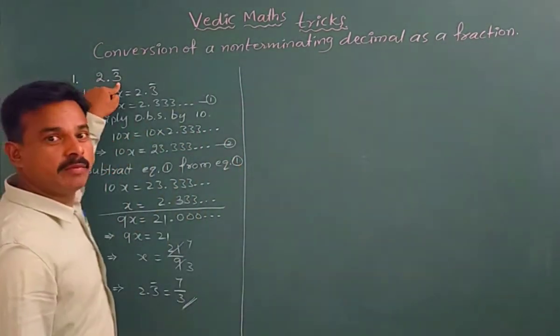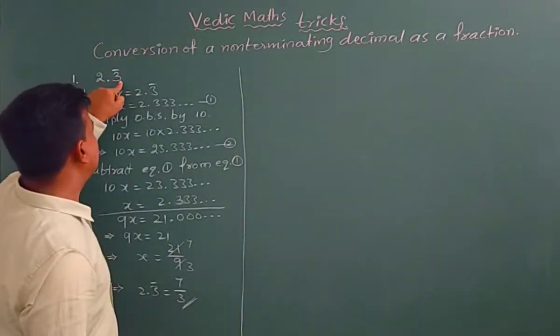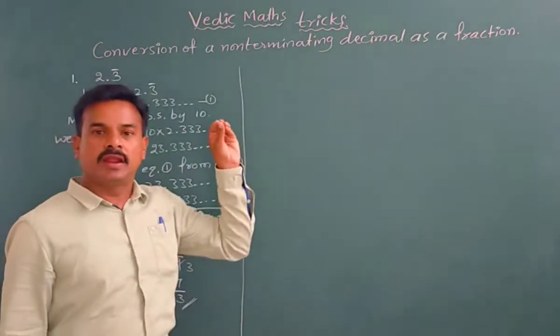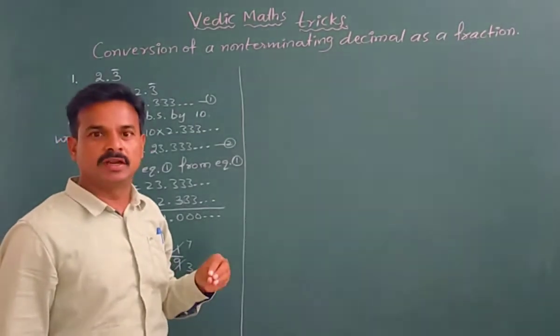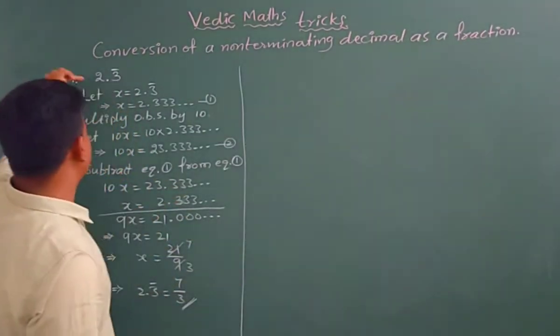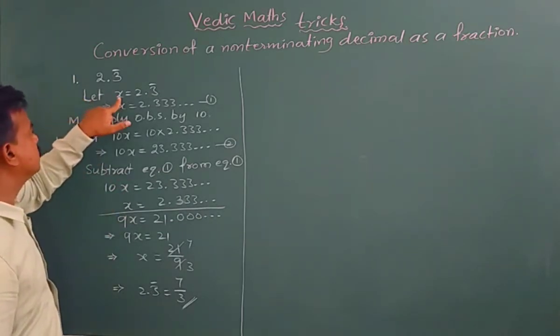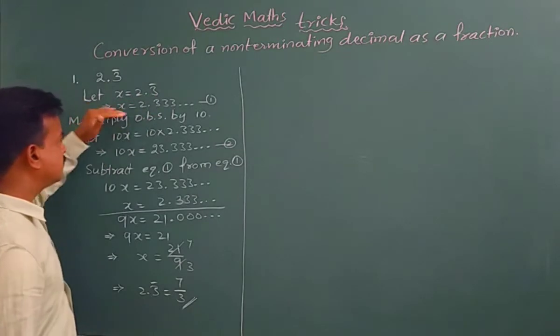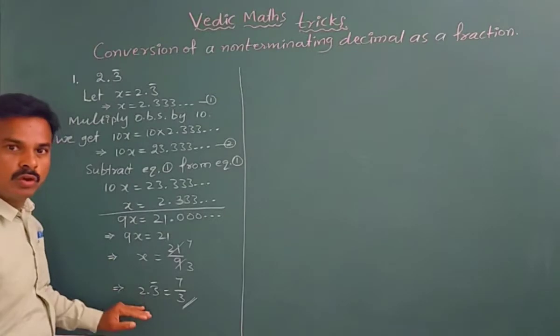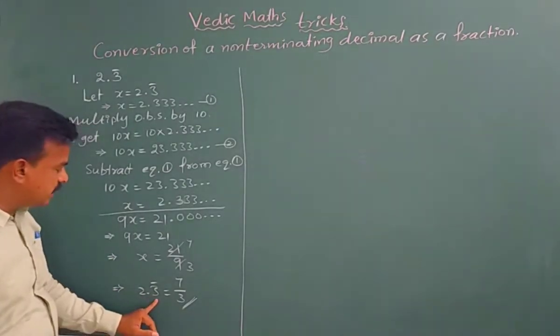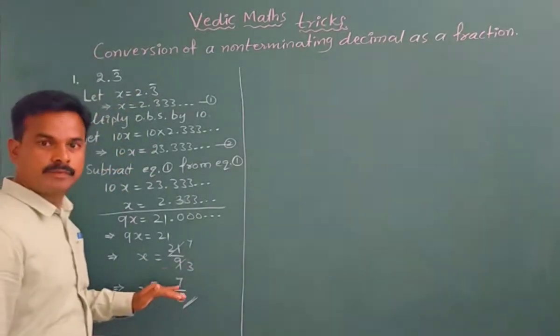2.3 bar, you see here, this 2.3 bar is a non-terminating recurring decimal. In the current way, we can do this solution by doing these steps. Just we have to assume let x is equal to 2.3 bar, and this is the first equation. Step by step these steps we have to do.